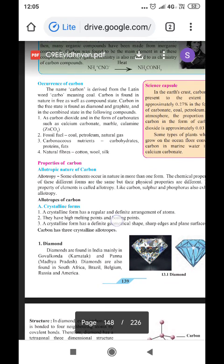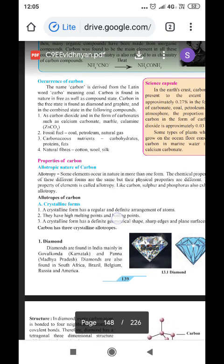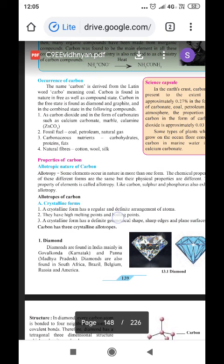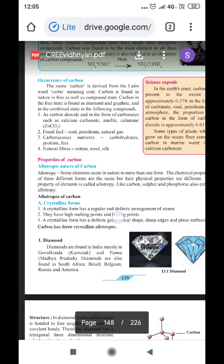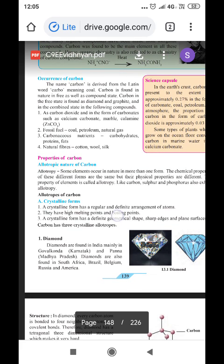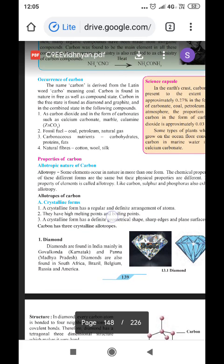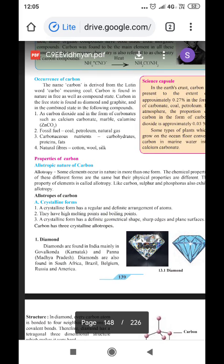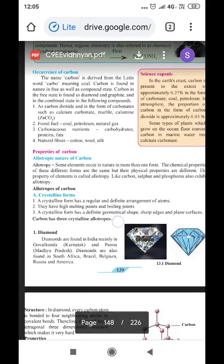As carbon dioxide, in the form of carbonates such as calcium carbonate, marble, calamine (i.e. ZnCO3), fossil fuels (coal, petroleum, natural gas), carbonic compounds, carbonaceous nutrients (carbohydrates, proteins, fats), natural fibers (cotton, wool, and silk).